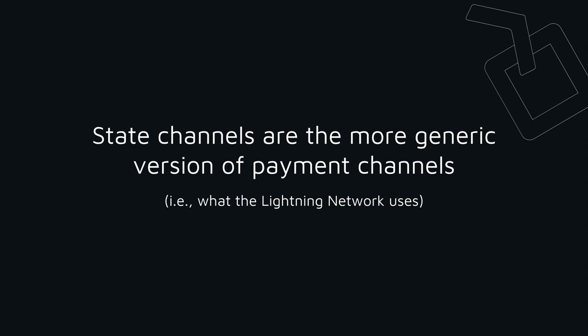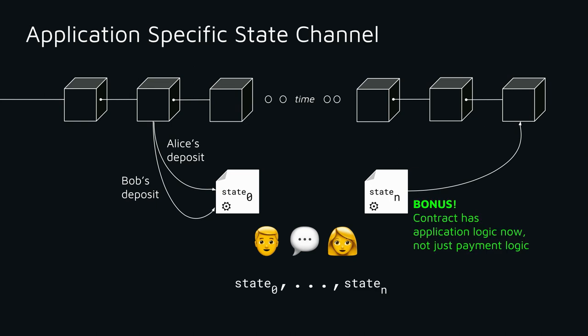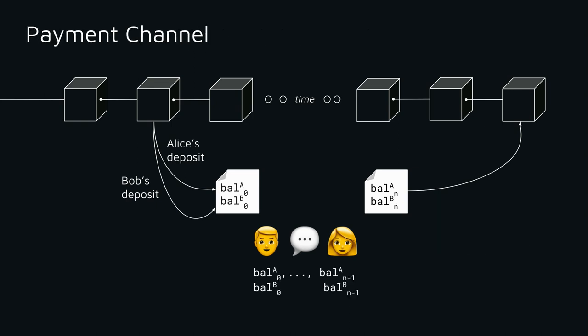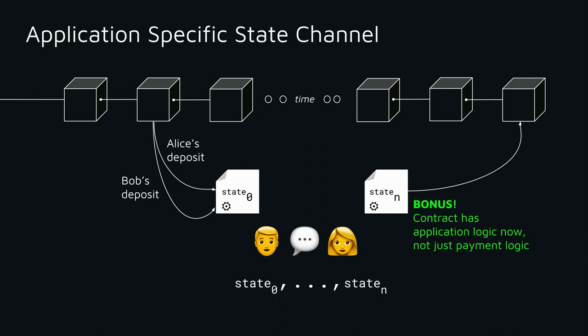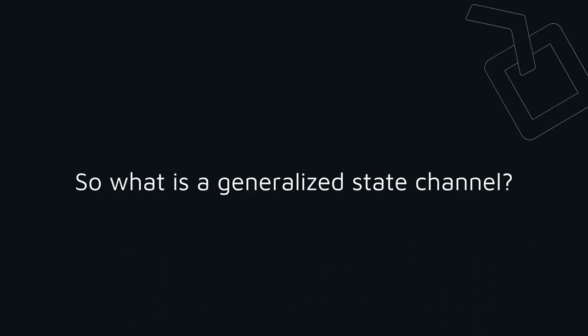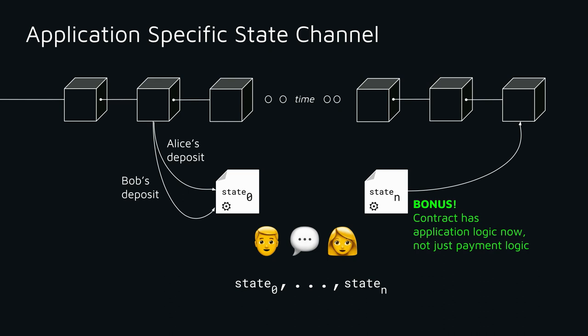Taking this further is the ability to do arbitrary computations using state channels, which is a generic version of payment channels — payments just sends money back and forth, whereas state channels enable arbitrary state via Ethereum computation. Instead of balances being sent back and forth, now we have state. Alice and Bob can open a channel, play multiple rounds of chess for different amounts, and whenever Alice wins she takes more money, enabled by the ability to execute arbitrary logic via smart contracts.